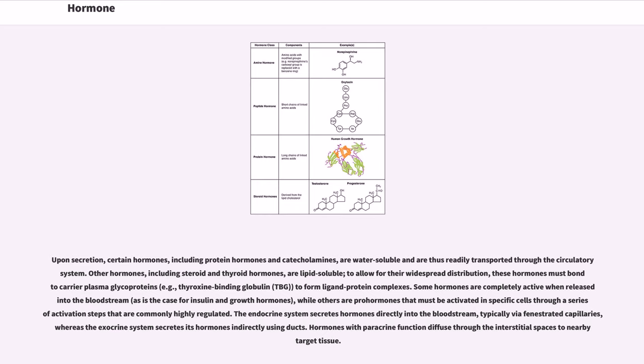Some hormones are completely active when released into the bloodstream, as is the case for insulin and growth hormones, while others are pro-hormones that must be activated in specific cells through a series of activation steps that are commonly highly regulated. The endocrine system secretes hormones directly into the bloodstream, typically via fenestrated capillaries, whereas the exocrine system secretes its hormones indirectly using ducts. Hormones with paracrine function diffuse through the interstitial spaces to nearby target tissue.